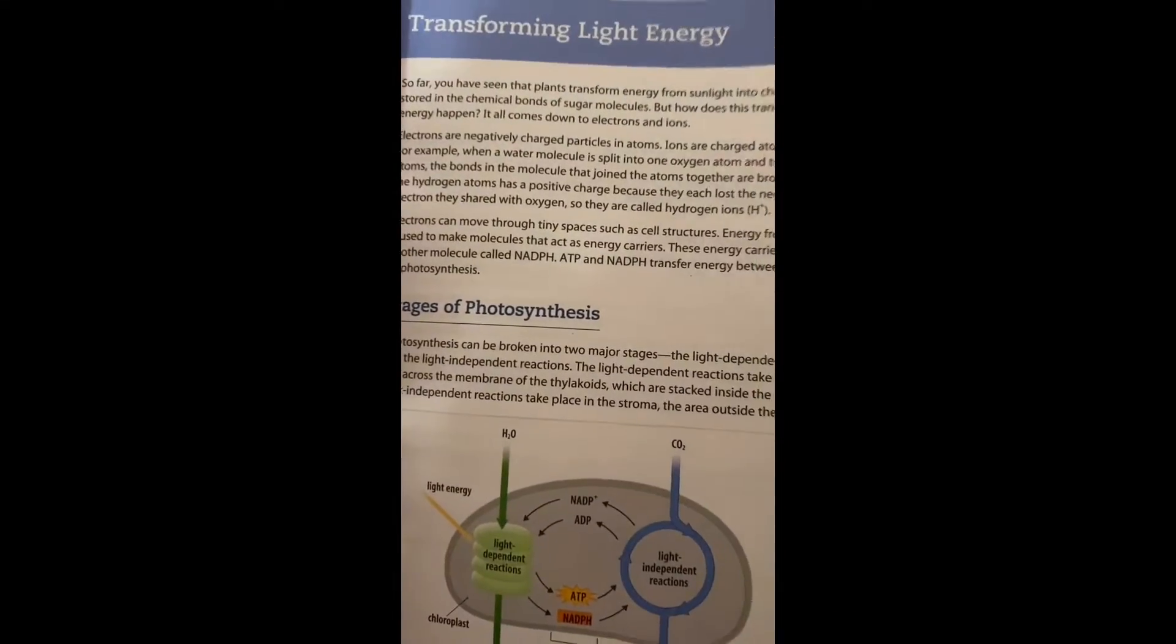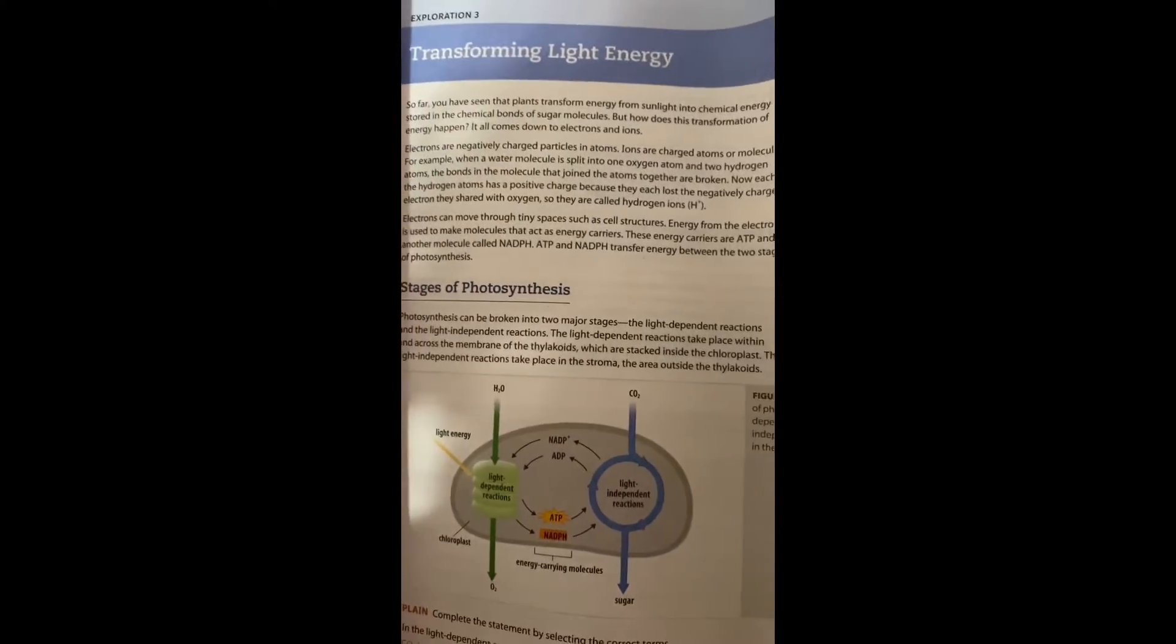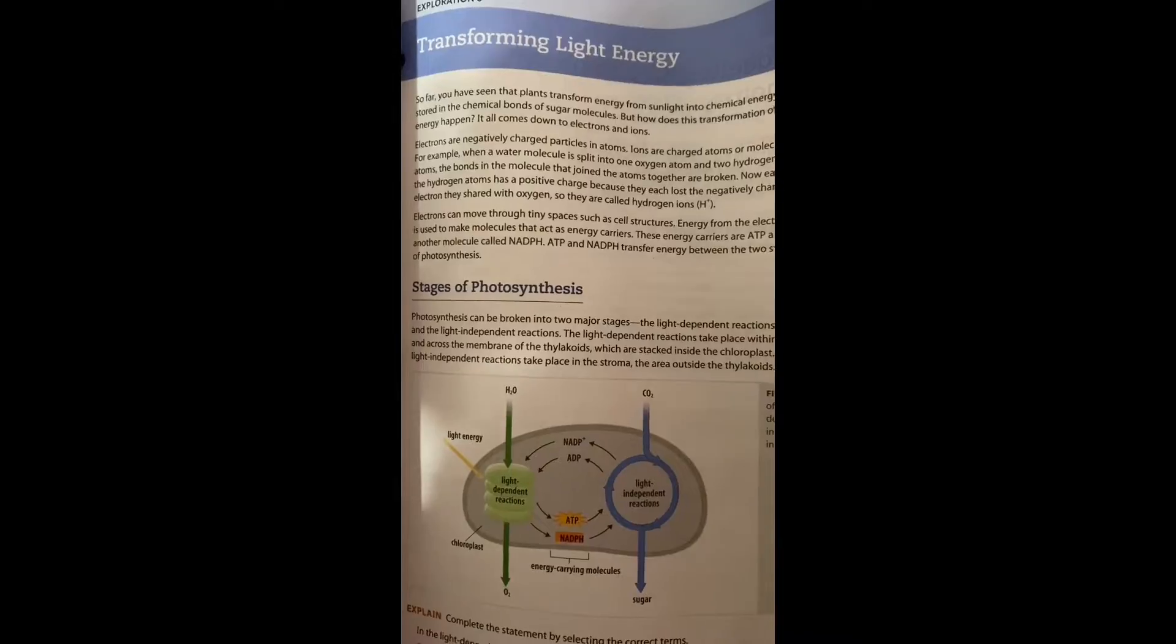Transforming Light Energy. Plants transform energy from sunlight to chemicals stored in the chemical bonds of sugar molecules. But how does this transformation of energy happen?